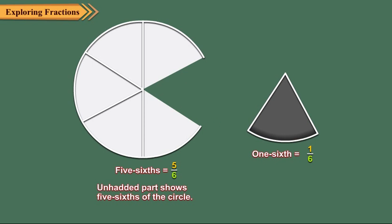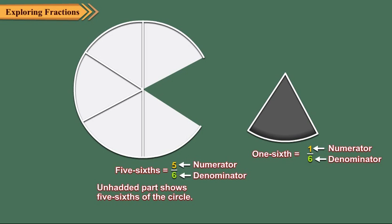In one upon six, one is called the numerator and six is called the denominator of the fraction one upon six. Similarly, in five upon six, five is the numerator and six is the denominator.